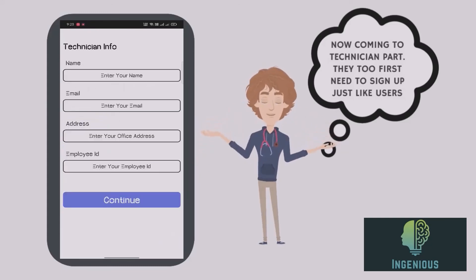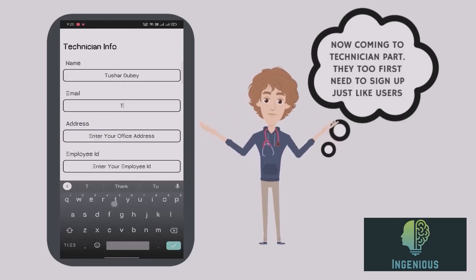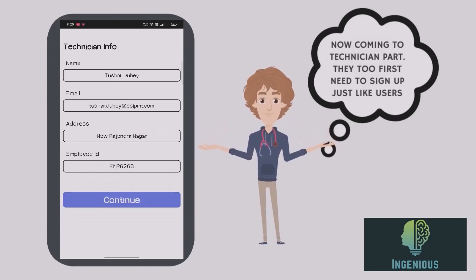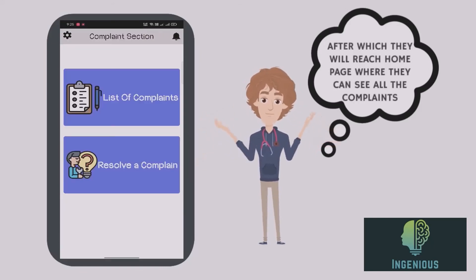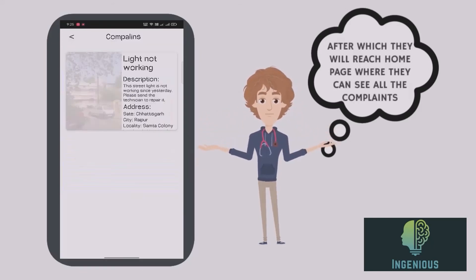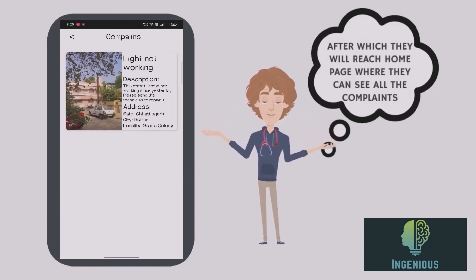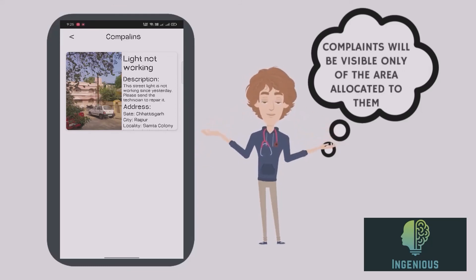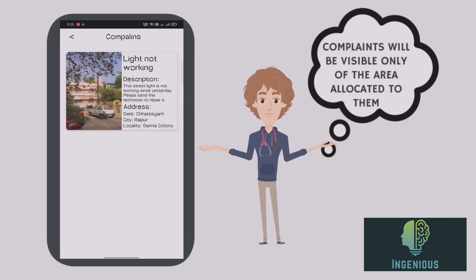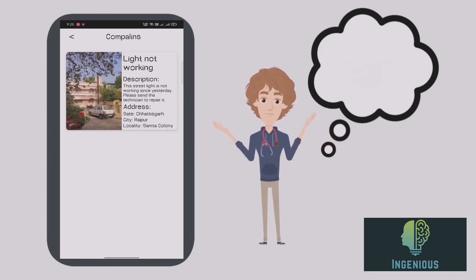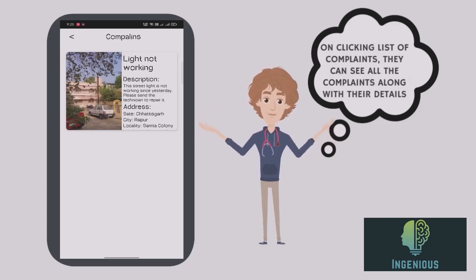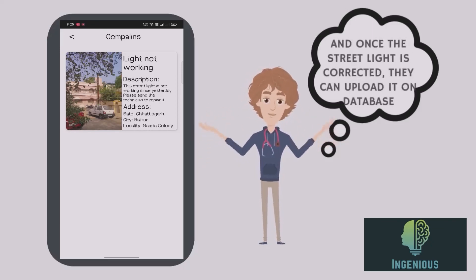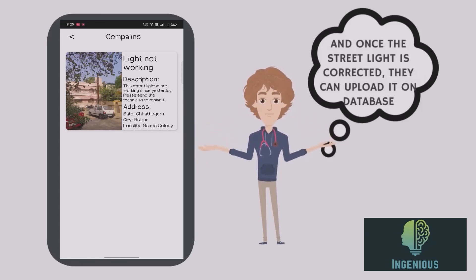Now coming to the technician path — they too first need to sign up, just like users. After which they reach their home page where they can see all the complaints. Complaints visible are only of the area allocated to them. On clicking a complaint, they can see all the details, and once the street light is corrected, they can upload confirmation to the database.